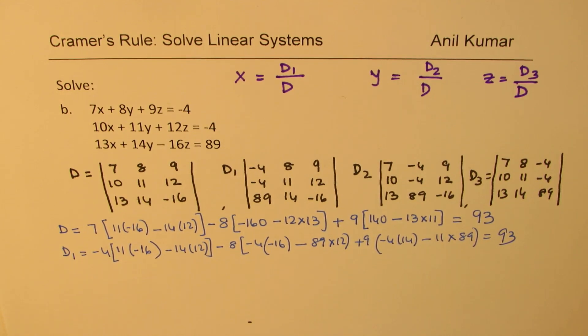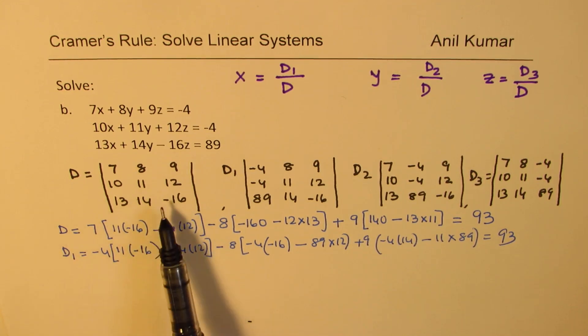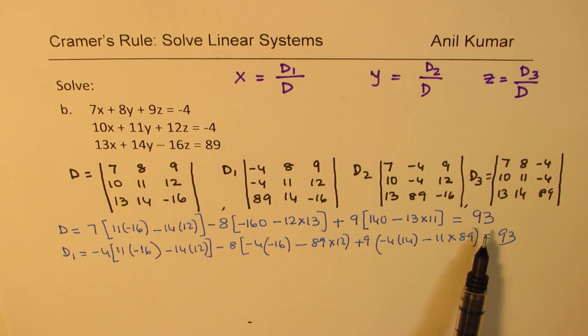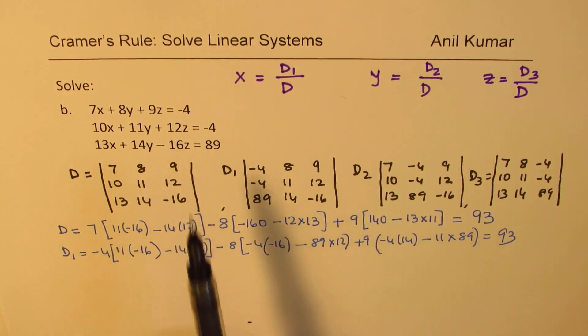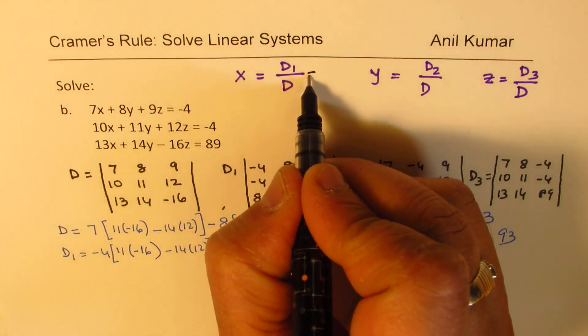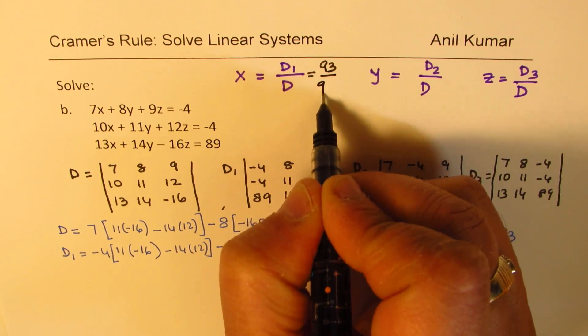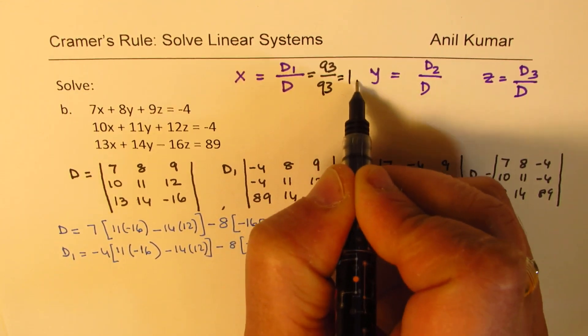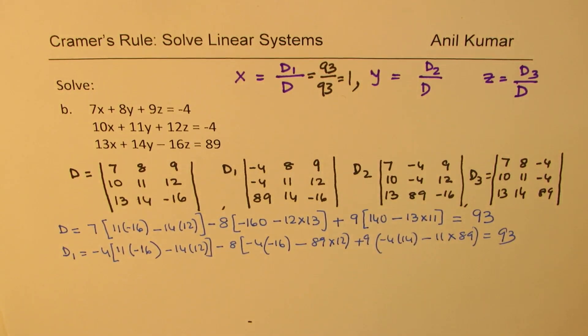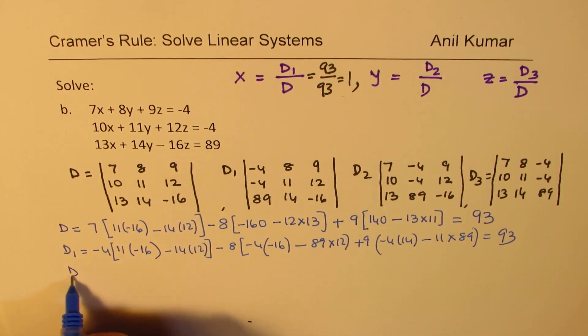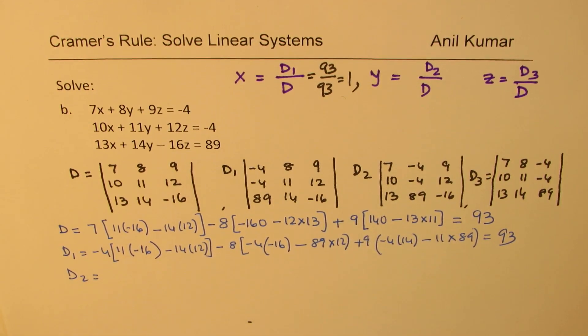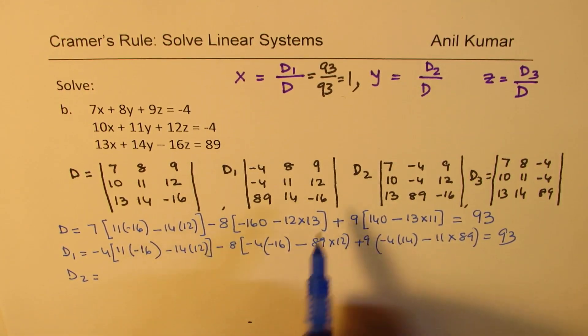So, first step, since the determinant of the whole matrix is non-zero, we have a solution. Is that clear to you? And we just found that this value for X will be 93 over 93. So, the X value is basically 1. Is that clear to you? So, it is so simple. So, you can actually pause the video now and calculate D2 and D3, substitute them, and get the answer.